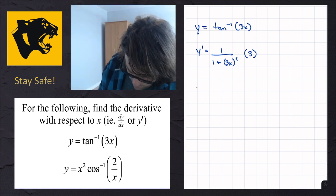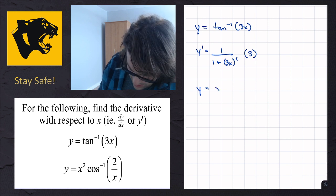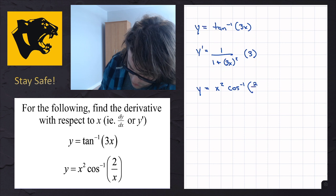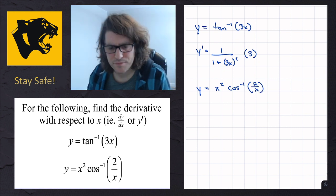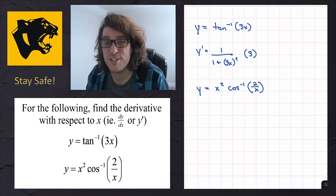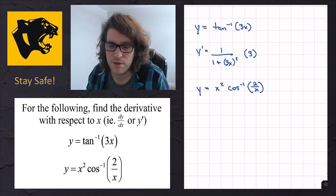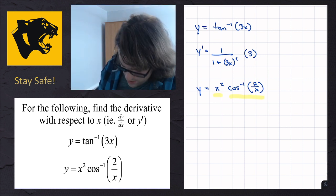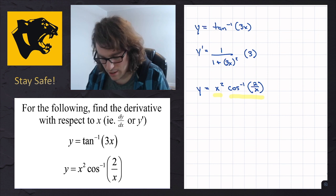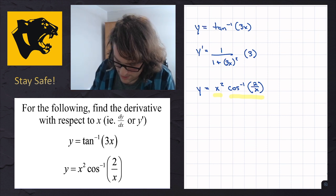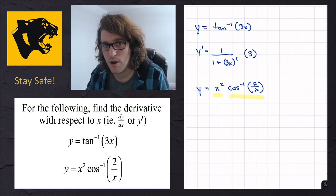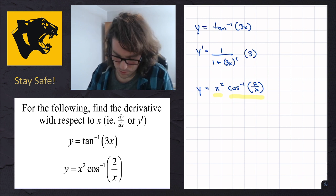For the next one, we have y equals x squared times the inverse cosine of 2 divided by x. In this one, there's still a chain rule with the inverse trig function, but there's also a product rule going on. We have the x squared part and the inverse cosine of 2 over x as our two pieces. I'll start by applying the product rule and seeing where it goes.